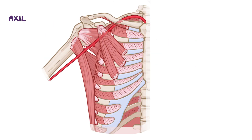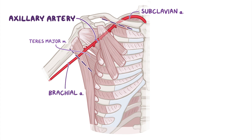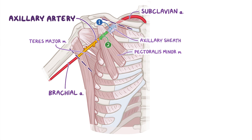Let's start with the axillary artery, which begins as a continuation of the subclavian artery at the lateral border of the first rib and extends to the inferior border of the teres major before turning into the brachial artery. The axillary artery is divided into three parts as it passes posterior to the pectoralis minor. The first part is between the lateral border of the first rib and medial border of the pectoralis minor and is contained within the axillary sheath. The second part is posterior to the pectoralis minor, and the third part extends from the lateral border of the pectoralis minor to the inferior border of the teres major.